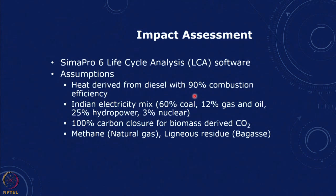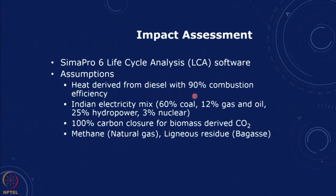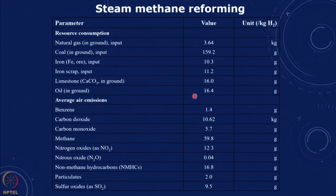For the electricity we use the Indian electricity mix. Biomass derived CO2 is considered 100 percent carbon closure, so zero CO2 impact. We look at natural gas and gas as the residue — this is the electricity supply mix assumed in this case. For steam methane reforming as the base case, we use natural gas and coal, and these are all the different kinds of inputs used for the net energy analysis of hydrogen from steam methane reforming, which is used as the base case for comparison.